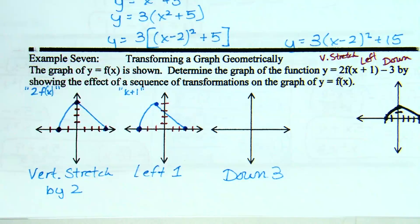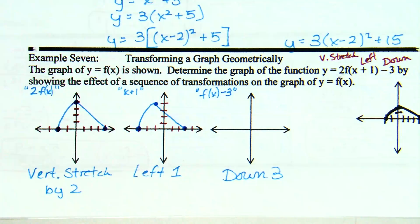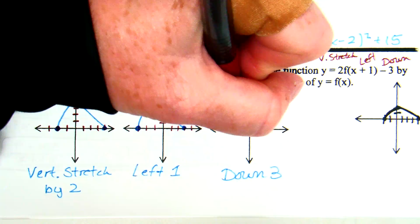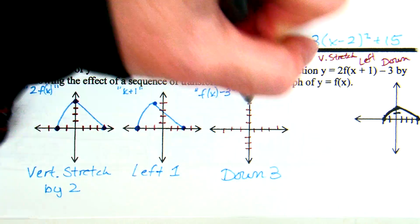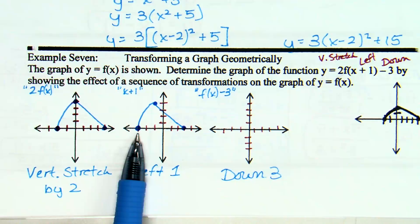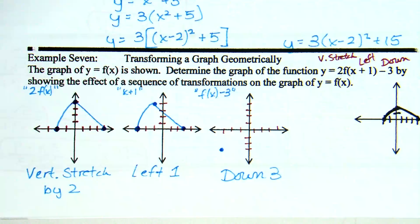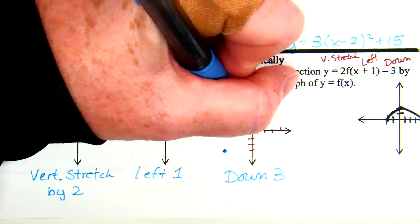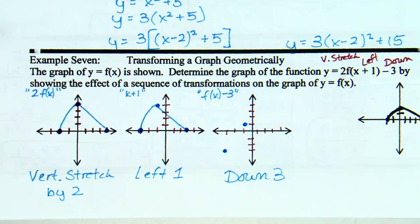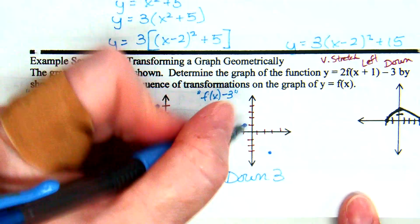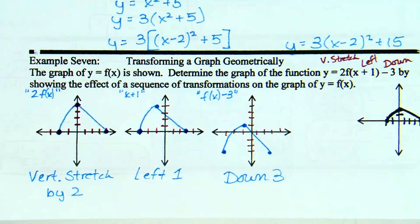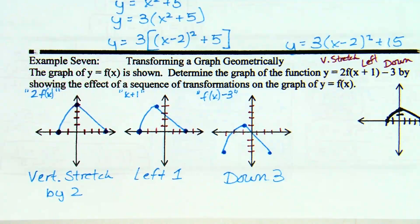So, the last thing we're being asked to do, the minus 3 is down 3. So, when we do down 3, all of those points we just mentioned, go down 3. So, I did have a dot at negative 3, 0. When we take that down 3, negative 3, negative 3. I did have a point at negative 1, 4. Take that down 3. Negative 1, 1. I did have a point at 3, 0. Take that down 3. 3, negative 3. Looks something like that.